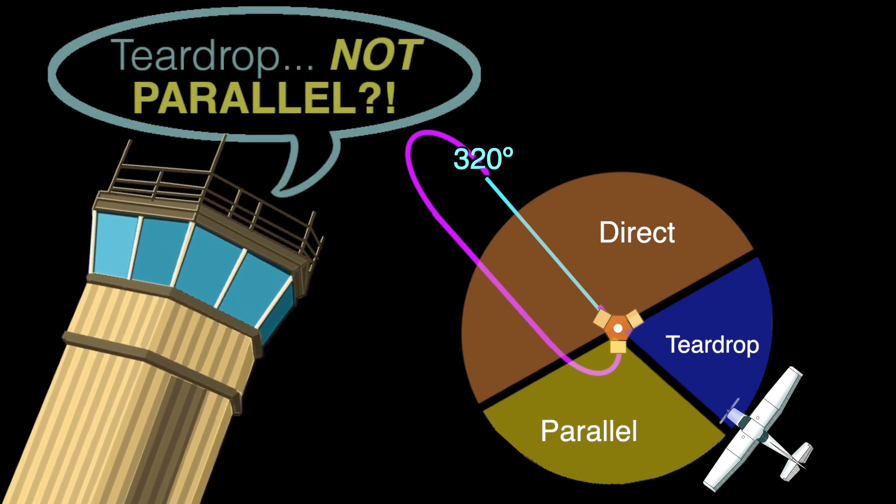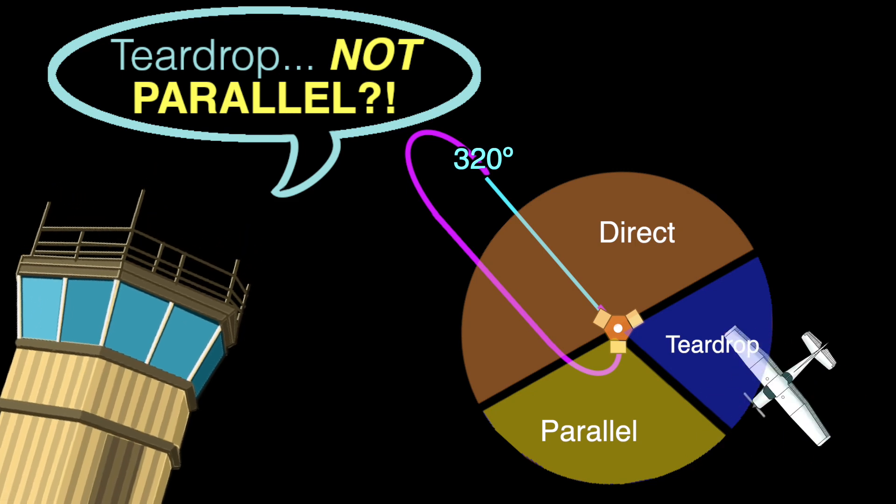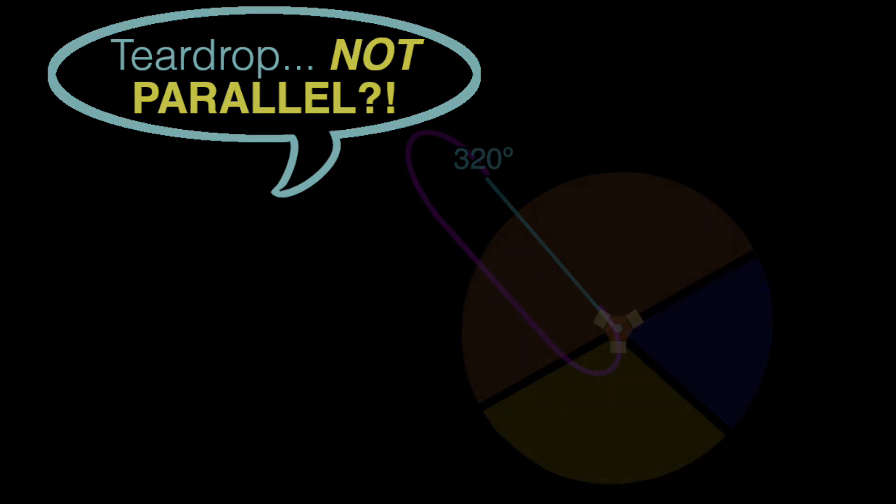So no matter which method you end up choosing to identify what holding entry to use for a situation, remember the fundamental objective is to minimize the amount of turning needed for safety reasons and stay within the protected airspace because it is the area specially reserved for you by the ATC. Happy circling!